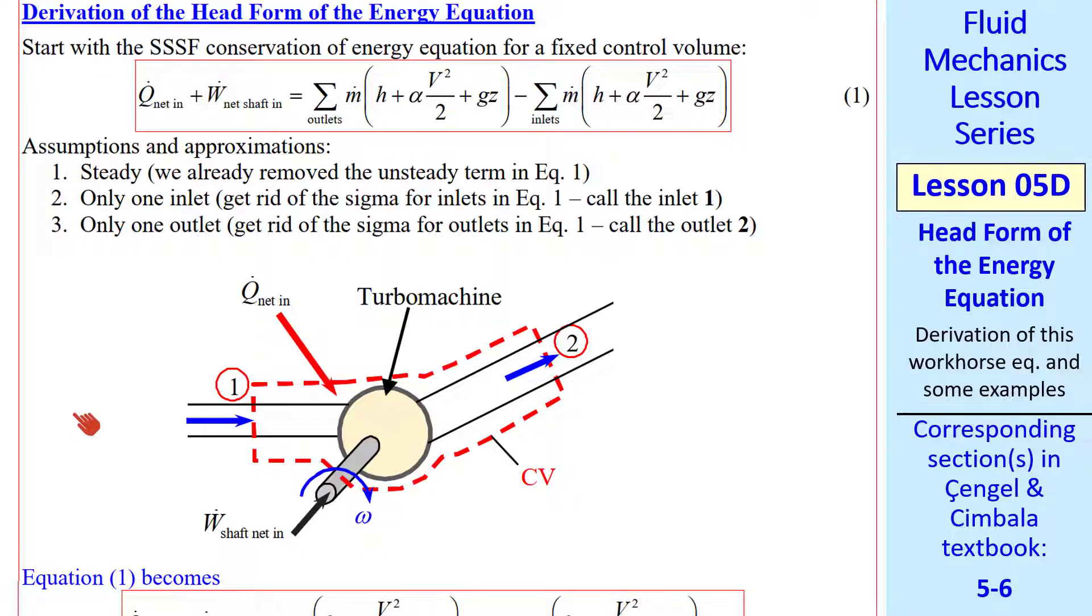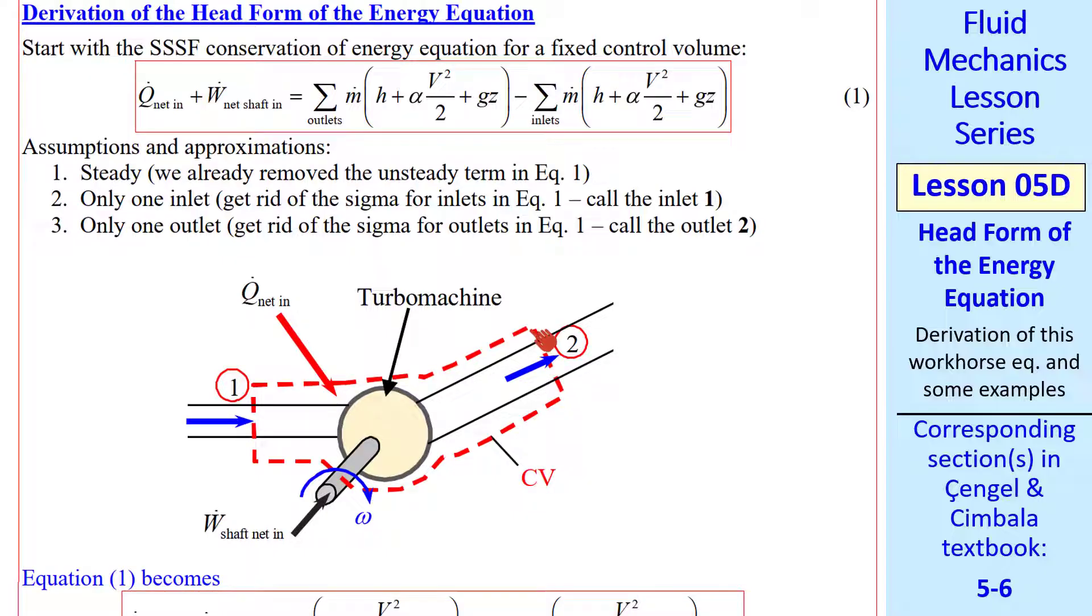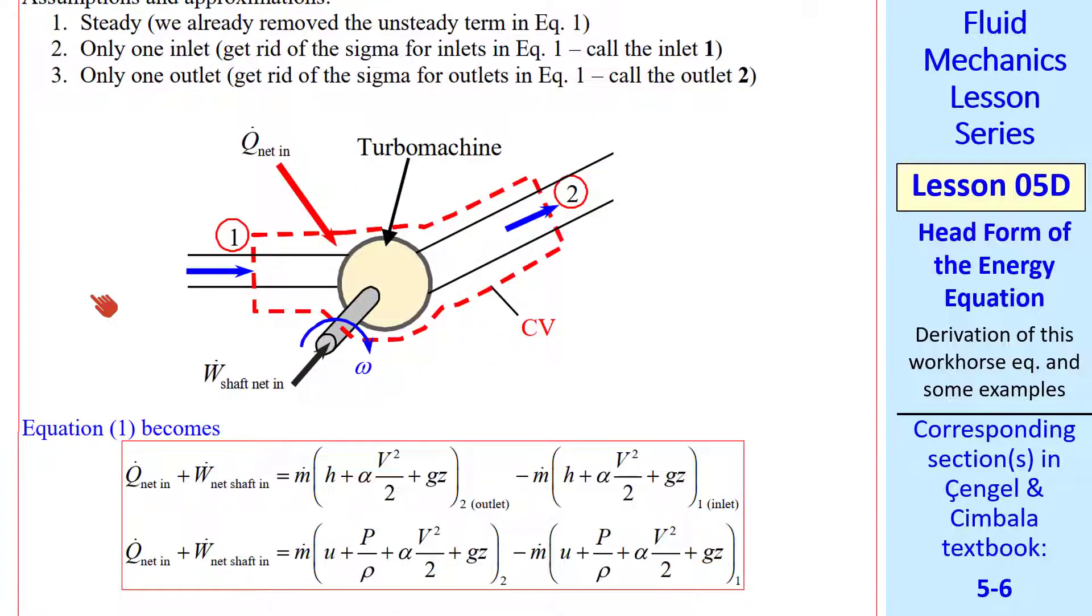So here's a typical setup. We have a flow coming in, a flow coming out, and going through some kind of turbo machine, which can be a pump or a turbine. We have some net heat transfer coming in, and we have some shaft work. We pick a wise control volume that cuts through the outlet, cuts through the inlet, and cuts through the shaft. We don't have to follow exactly along the pipes, but can put our control volume anywhere outside here. So with these assumptions and approximations, equation 1 becomes this equation, which is basically the same thing except without the sigmas.